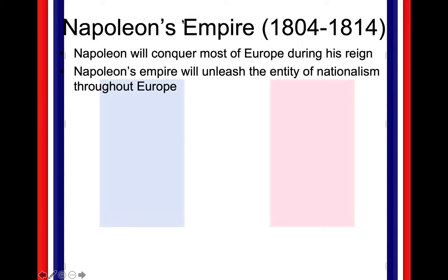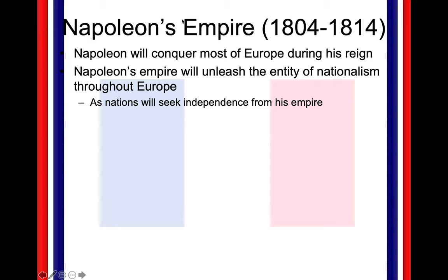As Napoleon conquers countries and these areas are ruled by the French, you're going to start to see — for example, the best example in Italy and in Germany — nationalism emerge. These people who are being oppressed and ruled by the French are going to want their own country. We're going to see nationalism — the idea of wanting to unite around a country, around a common language and culture. That entity of nationalism is definitely going to be an effect of Napoleon, and it will be prominent as nations seek independence from his empire in Germany, Italy, and throughout Europe.